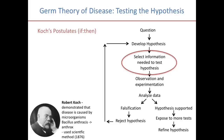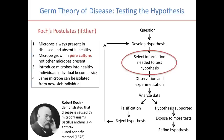In other words, he set up a set of criteria such that if each of those criteria were met, that would demonstrate that a microorganism caused a disease. These are called Koch's postulates, and we're going to go over each of the four postulates that were necessary for identifying the causative agent of disease.